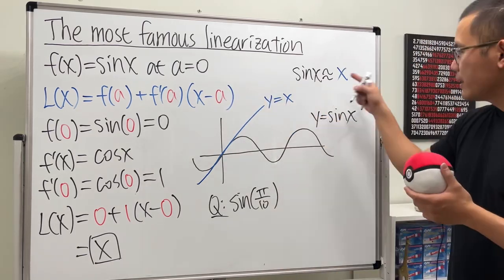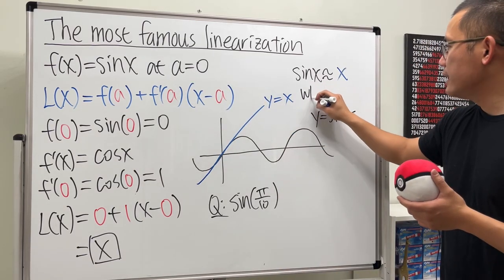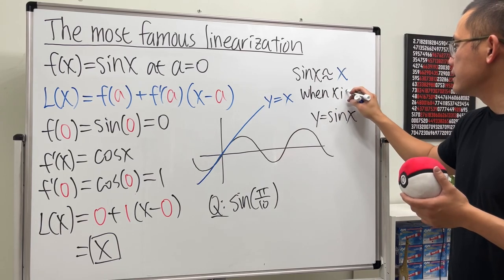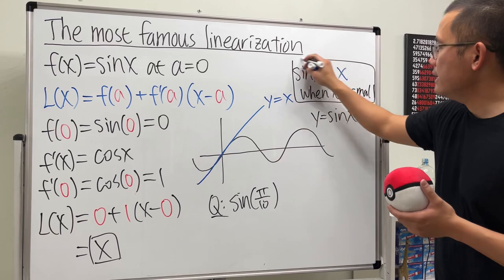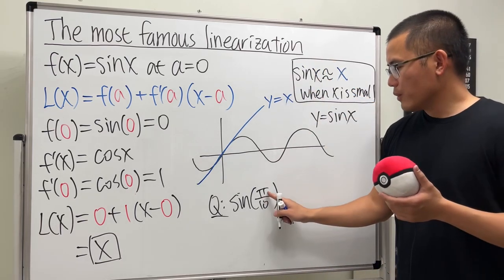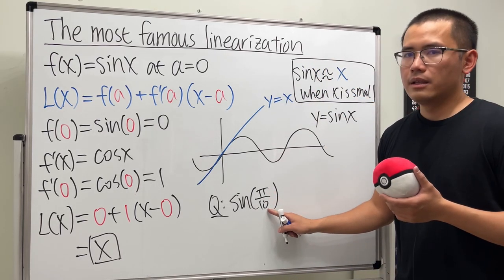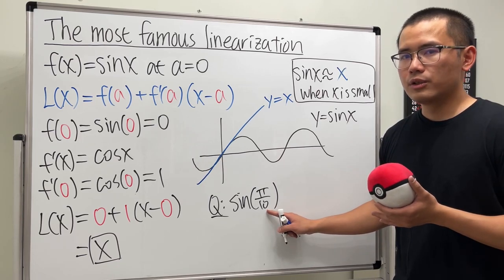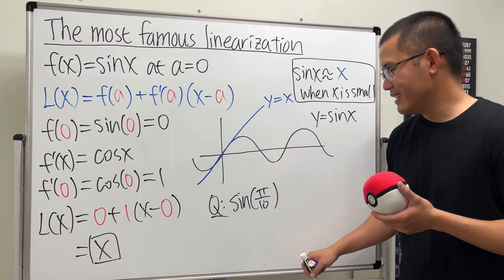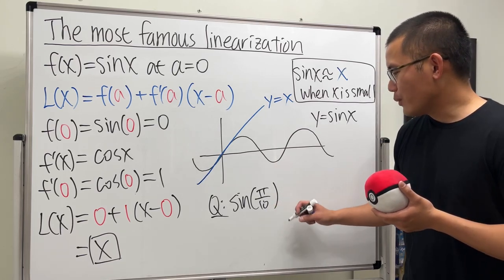And if you write this down, sine x approximately equals x when x is small. So what's π over 10? Well, π is about 3.14 divided by 10, so this is going to be 0.314.